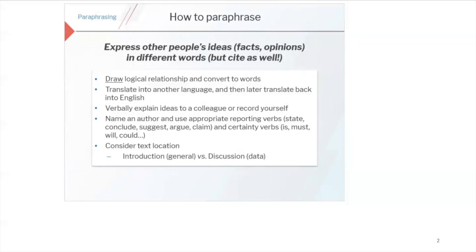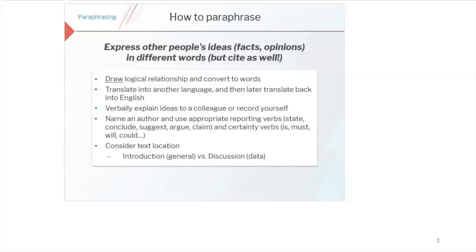Your paraphrased text will go into different sections of your paper and will need to be written differently in those different sections. If you're paraphrasing information for the introduction of your article, that text will be different to the kinds of information you put into the discussion, because your introduction sets the scene and tells the reader about the objectives of the work, whereas your discussion is set up around giving your reader answers and talking about the significance of your data.